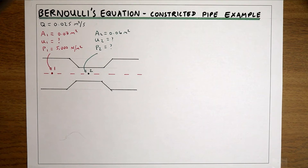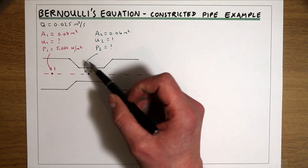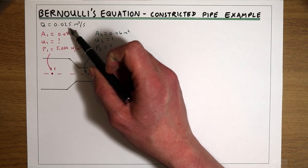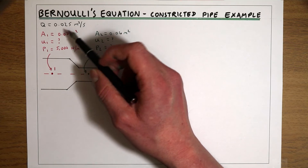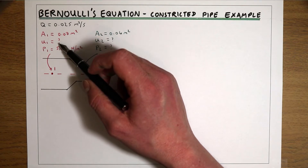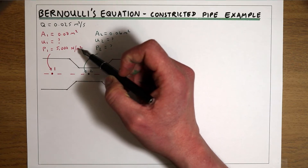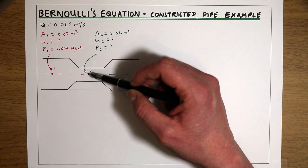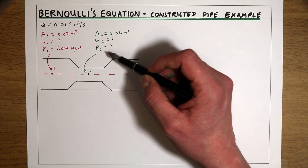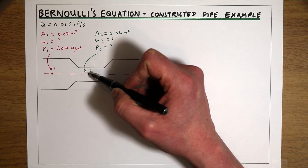In this video we're going to be using Bernoulli's equation to see what happens to the pressure of water in a pipe as we constrict the pipe's diameter. In this example we have a flow of water down the pipe of 0.025 metres cubed per second. The initial area of the pipe is 0.07 metres squared. We know the pressure at point 1 is 5,000 newtons per metre squared. We then constrict the area of the pipe so the new area is 0.04 metres squared, and we don't know the velocity or the pressure at point 2. Ultimately what we're trying to find is that pressure P2 at point 2 in the pipe.